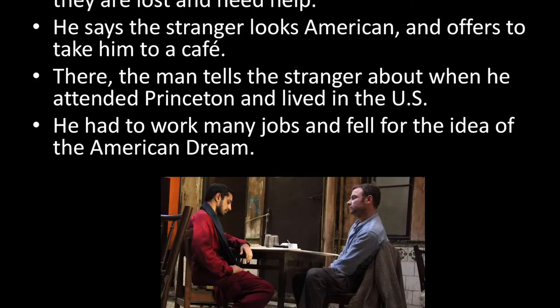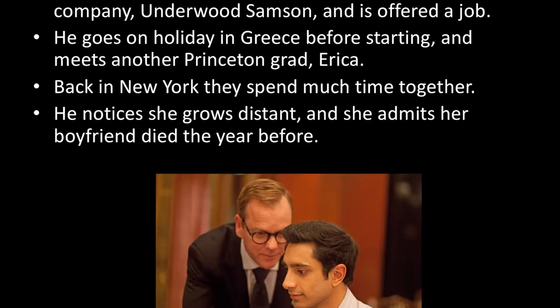When it comes to the summary, we begin by learning about a young man named Changez who asks a stranger if they are lost and need some help. The stranger is in Pakistan and Changez is talking to him. He says the stranger looks American and he offers to take him to a cafe. There, Changez tells the stranger about when he attended Princeton and lived in the US. He says he had to work many jobs and he fell for the idea of the American dream. After college, Changez gets an interview with a great company called Underwood Samson and is offered a job.